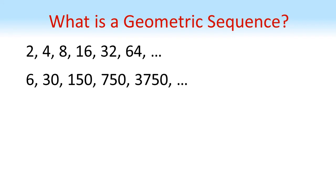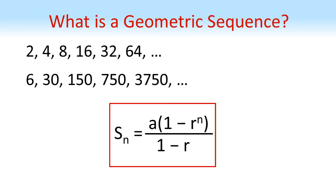It can be shown that the sum of the first n terms of a geometric sequence, which we call Sn, can be found using the formula Sn equals a times 1 minus r to the power of n all divided by 1 minus r, where a is the first term and r is the common ratio.